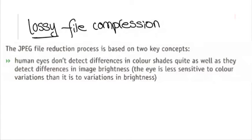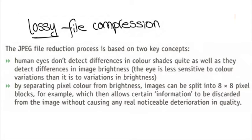The JPEG file reduction process is based on two key concepts. Human eyes don't detect differences in color shades quite as well as they detect differences in image brightness. The eye is less sensitive to color variations than it is to variations in brightness. By separating pixel color from brightness, images can be split into 8x8 pixel blocks, for example, which then allows certain information to be discarded from the image without causing any real noticeable deterioration in quality.